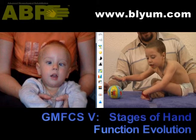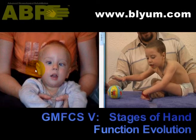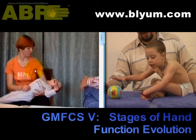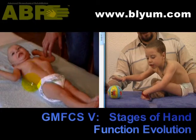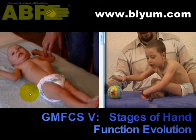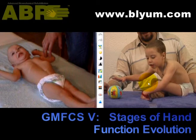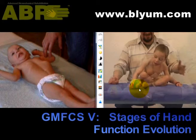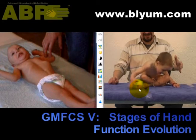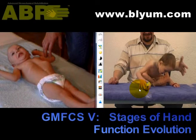This video illustrates the transitions of the hand function for this quadriplegic boy who started ABR at the age of three and a half. The initial picture you see it on the left. The sequences of visuals on the right demonstrate the way that this boy has changed over the two years of ABR.